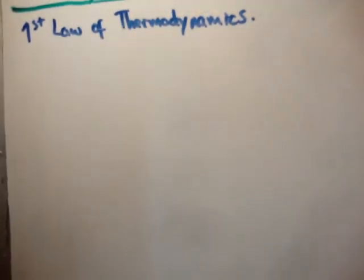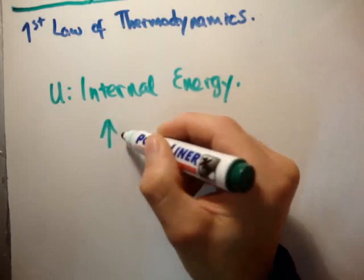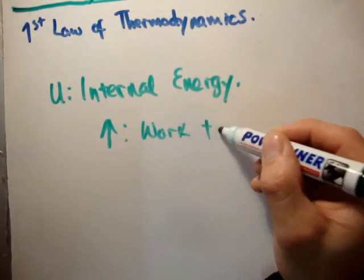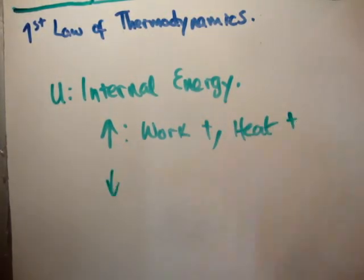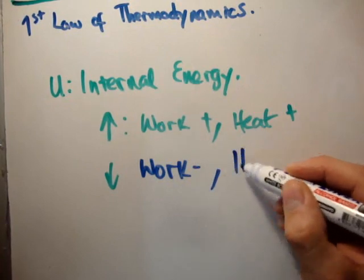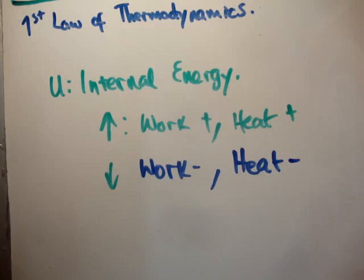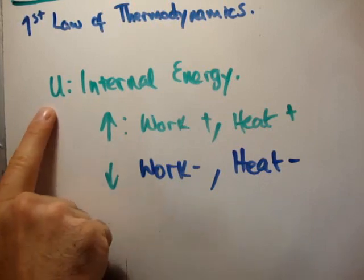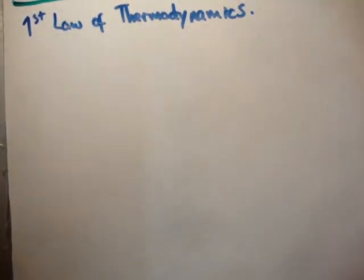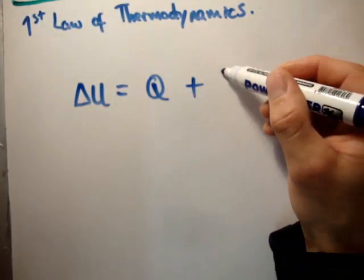U is the internal energy of a system. To make the internal energy go up, you either perform positive work or you give it positive heat. To make it go down, you do negative work — making the system do work on something else — or you bring it into contact with a cooler body, and the temperature difference will cause it to spontaneously give up heat. So we can define: the change in internal energy equals the heat put into the system plus the work done on the system.